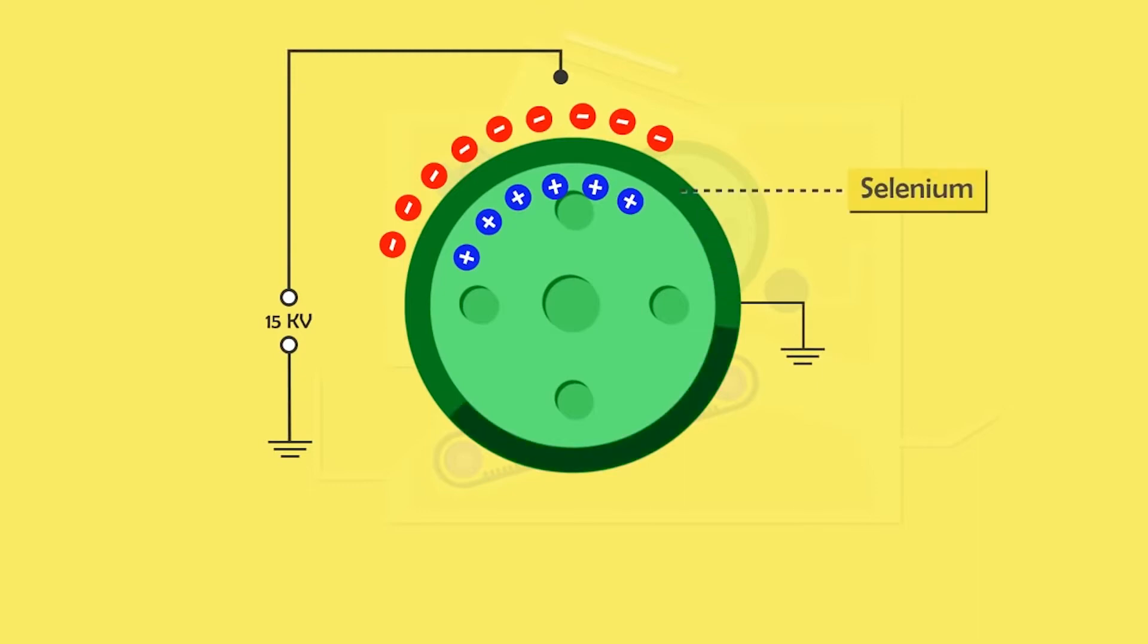On top of the drum lies a photosensitive chemical, a semiconductor called selenium. A semiconductor is simply a material whose conductivity value falls between the value of a conductor and an insulator. In other words, it is not fully a conductor and it is not fully an insulator.